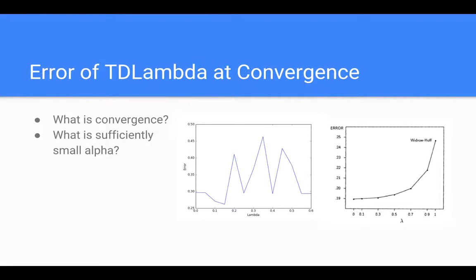The first figure we're trying to create is the average error on the random walk problem under repeated presentations of 10 sequences until convergence. The root mean square error was averaged over 100 training sets. The paper is underspecified in a couple of ways here.